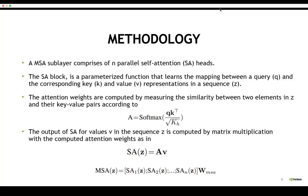And once we have computed the attention weights, the self-attention for the values read in the sequence is computed by matrix multiplication with the computed attention weights.